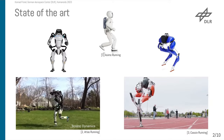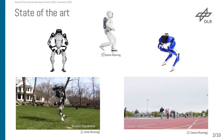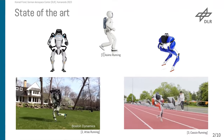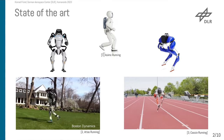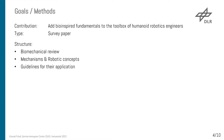If you think about bipedal running, you will most likely think about ASIMO, CASSIE, or ATLAS running. They already achieved tremendous results back in the day. But if you now take a look at the state-of-the-art humanoid robots appearing at the IEEE-RAS Humanoids Conference 2023, you will notice that most of these robots are not able to run yet, but want to achieve that in the future. Thus, my goal was to add bioinspired fundamentals to the toolbox of humanoid robotics engineers.